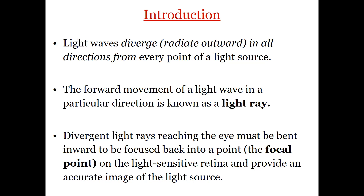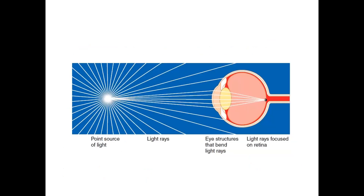In this situation, we call it a light ray, and the divergent light rays should bend inside the eye in order to be focused on a specific point we call the focal point on the light-sensitive retina, which is responsible for the detection of the light and the image based on the light rays which have reached the eye.